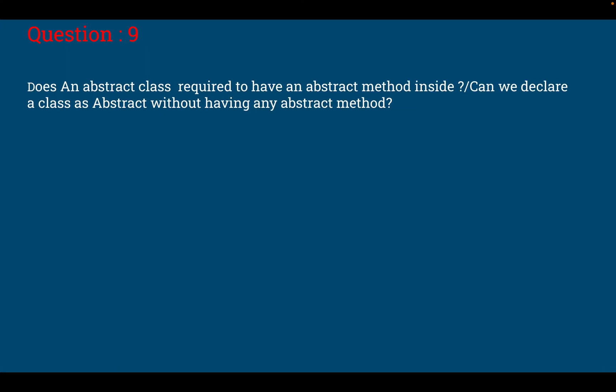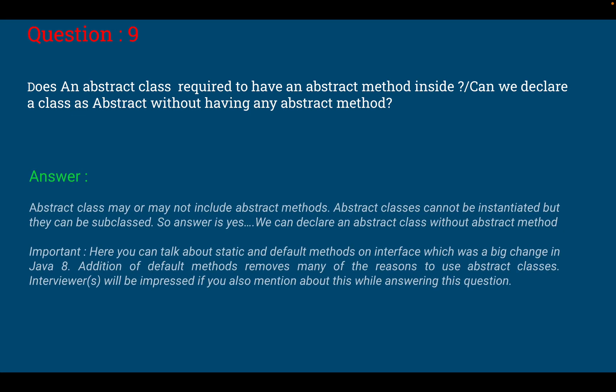Now moving to next question: does an abstract class require to have an abstract method inside? Can we declare a class abstract without having an abstract method? The answer is yes. Abstract class may or may not include abstract methods. Abstract classes cannot be instantiated but they can be subclassed. So the answer is yes, we can declare an abstract class without abstract method.